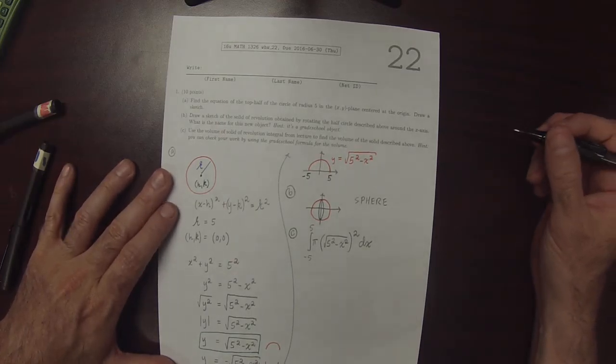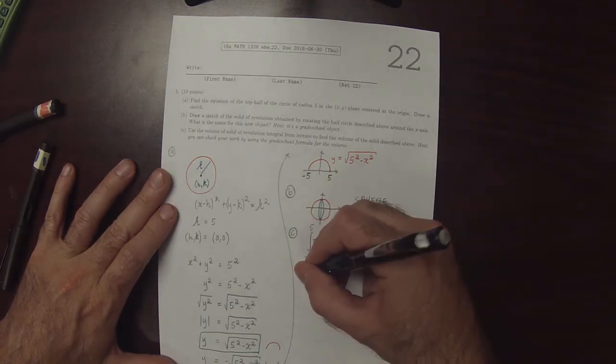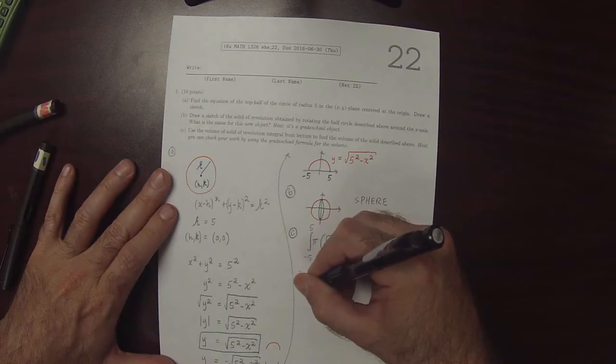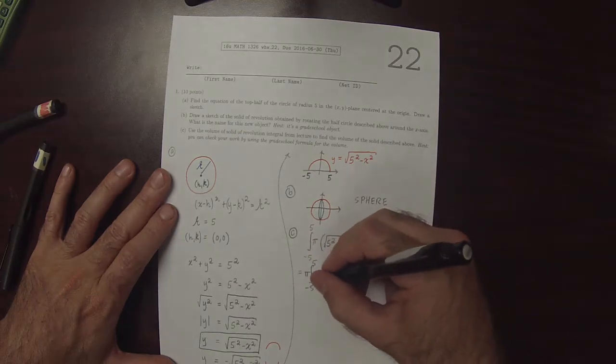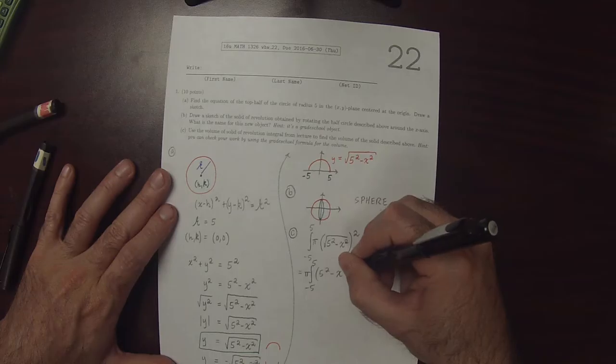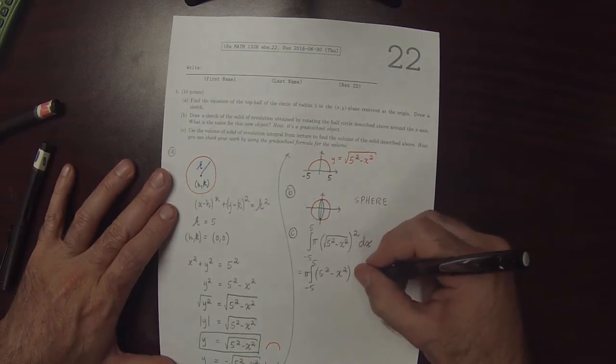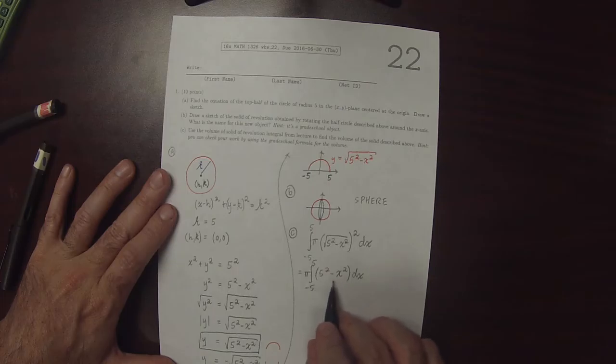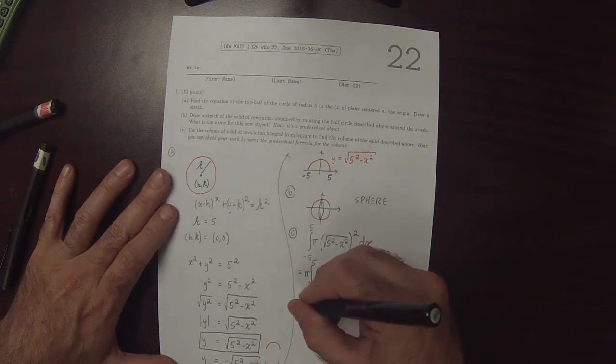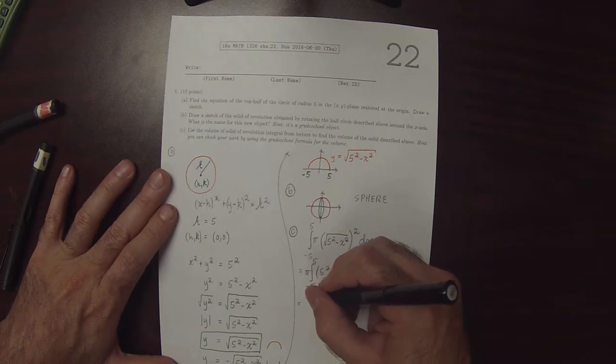So let's simplify this first. So this would be integral, I'll factor the pi out, negative 5 to 5 and then 5 squared minus x squared dx. And then both of these terms have anti-derivatives.